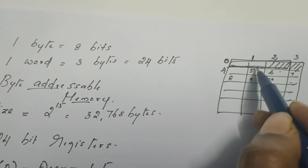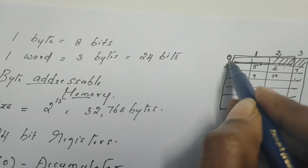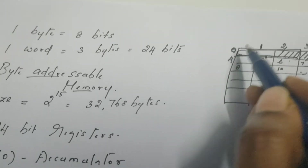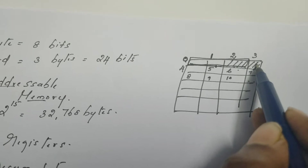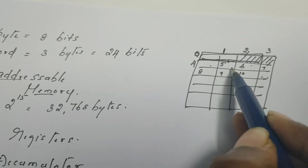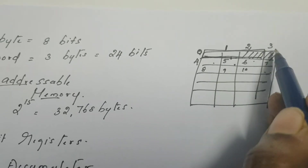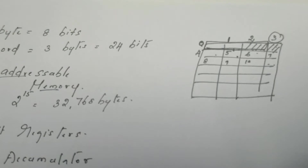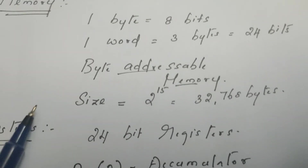The address of a word is the lower-order address. So bytes at addresses 0, 1, 2 form the first word — the address of this word is 0. The next word occupies bytes at addresses 3, 4, 5, so the address of that word is 3, and so on. This is what we need to know about the memory of SIC architecture.